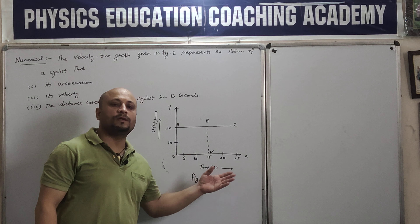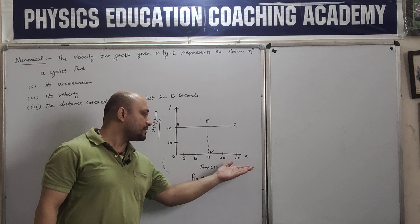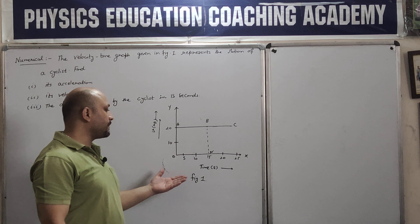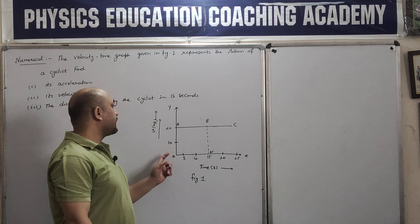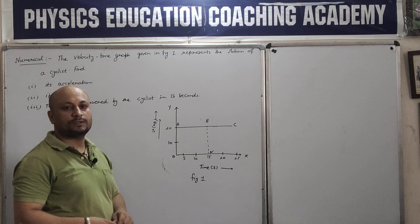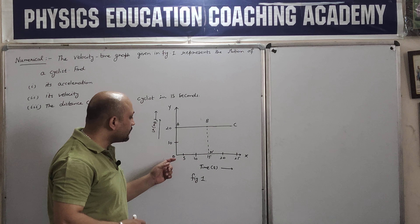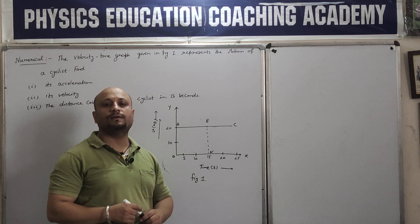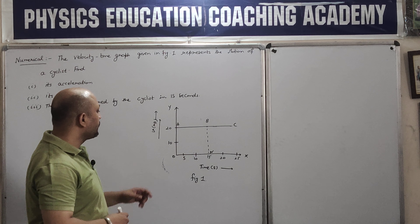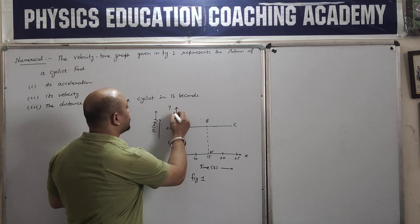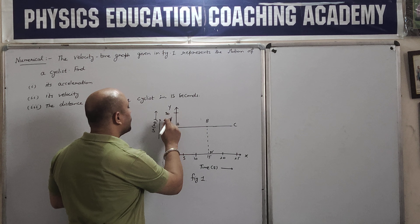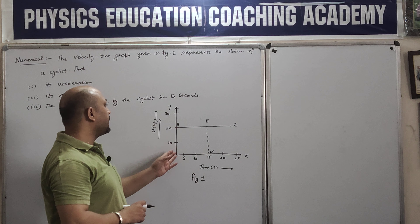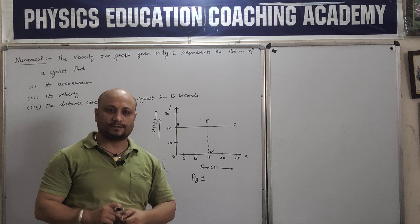Here the graph is given to you. This is the X-axis and this is the Y-axis. On the X-axis we have taken time, and on the Y-axis we have taken velocity. The values 5, 10, 15, 20, 25 are the time in seconds, and 10, 20 are the velocity in meter per second. So the X-axis represents time and the Y-axis represents velocity.